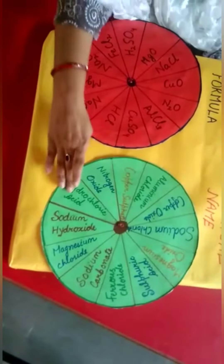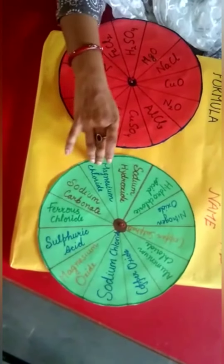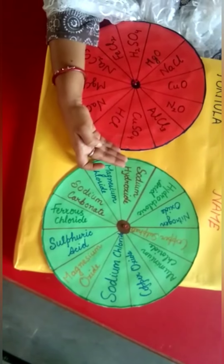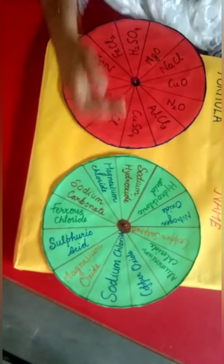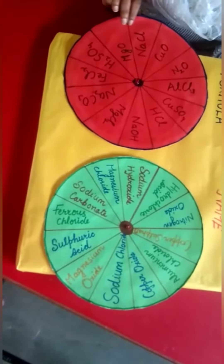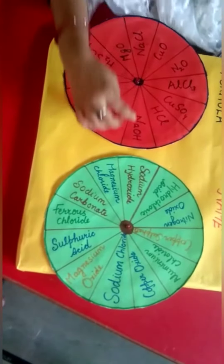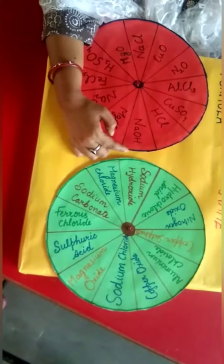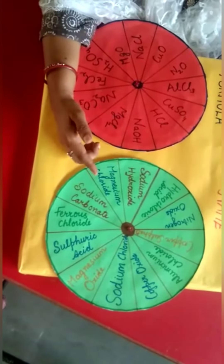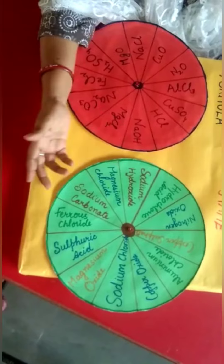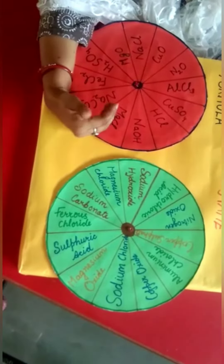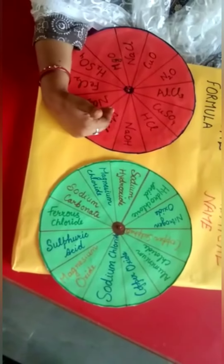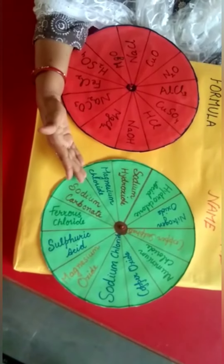Next, similarly, if we want to find the formula of sodium hydroxide, then rotate the disc and find the formula of sodium hydroxide. Just with this, the student can get maximum knowledge about the chemical formula and chemical name.